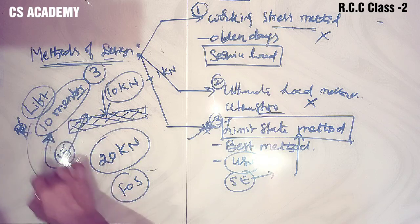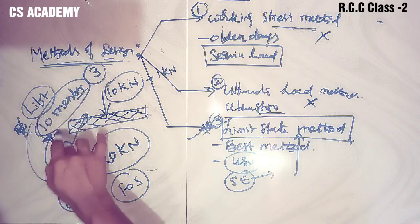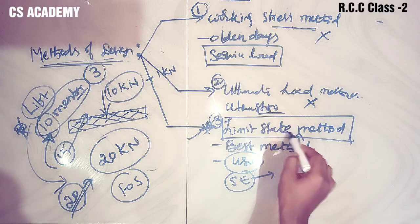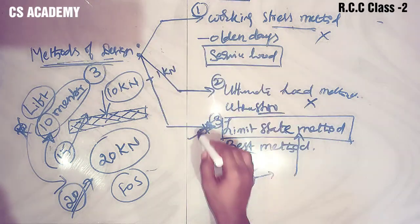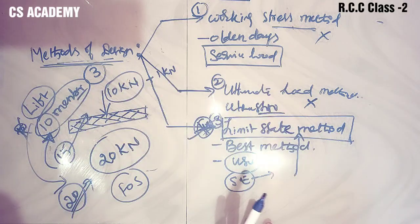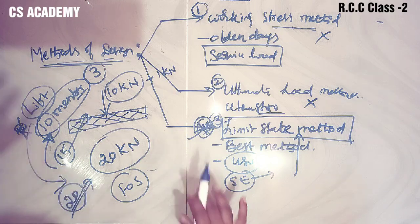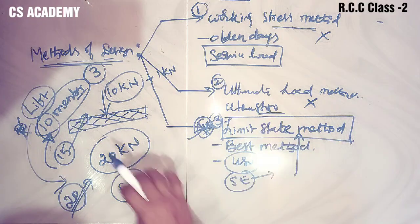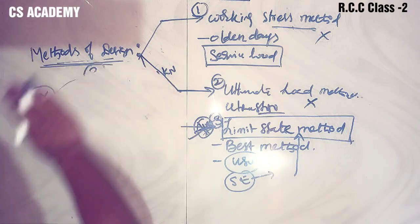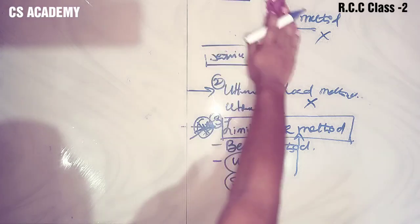We have a factor of safety. We have a capacity designed for 20 members, even though the actual capacity is 10 members. So in the limit state method, we design with a factor of safety, and that is why the limit state method is the best method among the three. Nowadays we follow this limit state method.